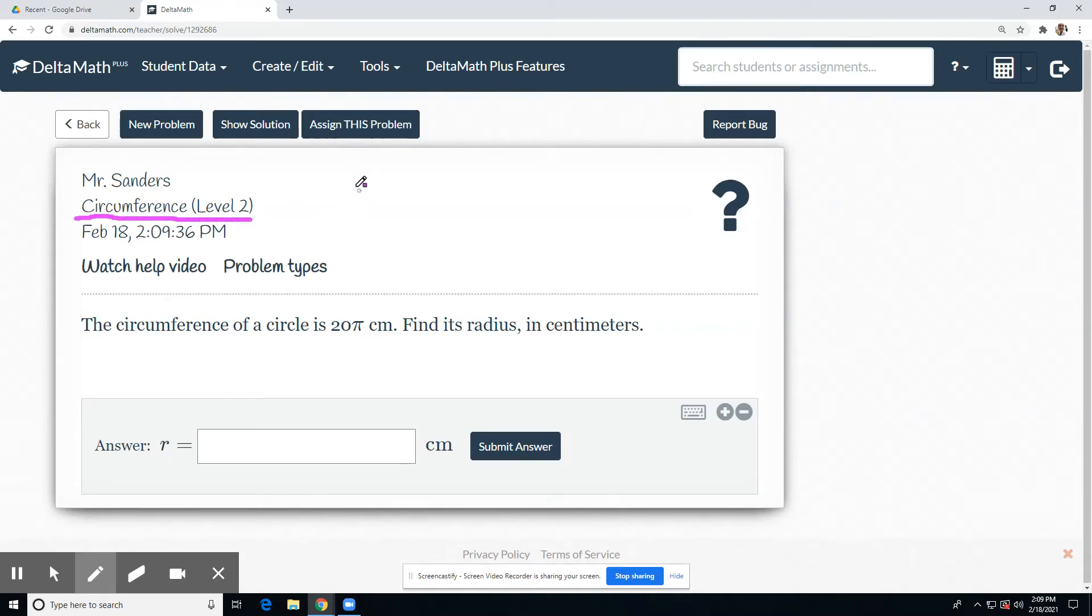Circumference, the second level. What's the circumference equation? Always write out your equations to start off. C equals 2 pi r.